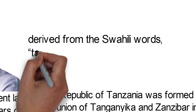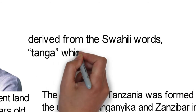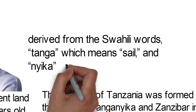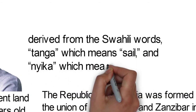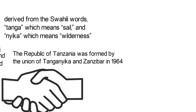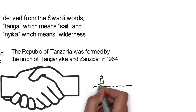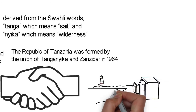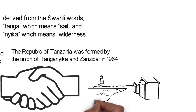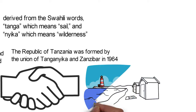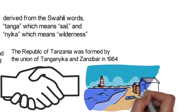Tanganyika is derived from the Swahili words Tanga, which means sail, and Ngika, which means wilderness. Zanzibar, on the other hand, originates from Zenji, the name for a local people meaning black, and the Arabic word Bar, which means coasts.